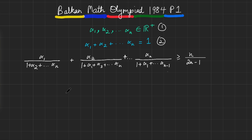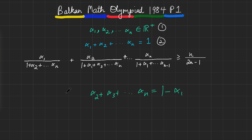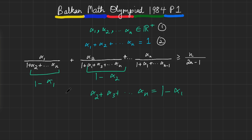Whenever you're given conditions and inequalities, you always want to try to force them in — there's a reason the condition is given. One way to use condition two: the denominator has α₂ through αₙ, which is just 1 minus α₁. Similarly, the next term's denominator is 1 minus α₂, and so on up to 1 minus αₙ.